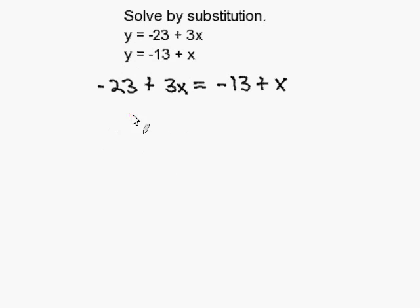So now I simply solve for my x. I'm going to bring all the numbers to one side and all the variables to the other side. So I'm going to add 13 on both sides of the equal sign. And that gets me negative 10, and the 13 here cancels out.